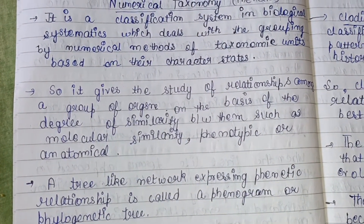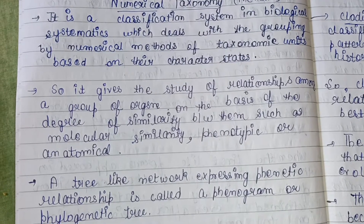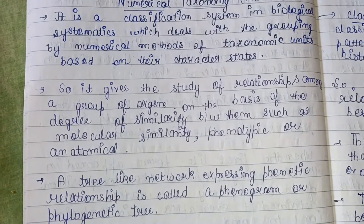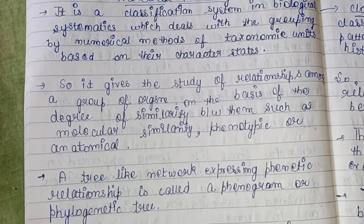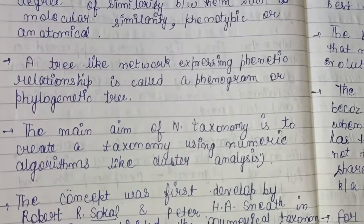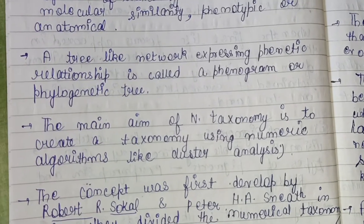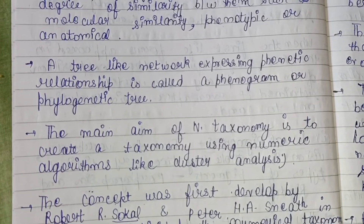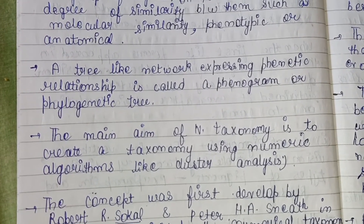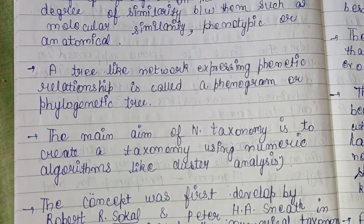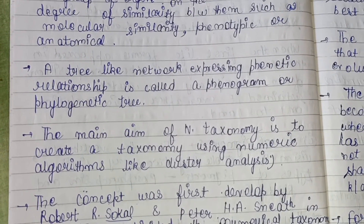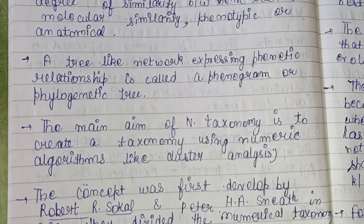Then there is phenotypic or anatomical similarity. Anatomical basically means the structural differences or similarity of the internal structure of any organism. A tree-like network expressing the phenetic relationship — that is, the evolutionary relationship — is called a phenogram or phylogenetic tree.